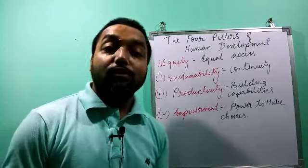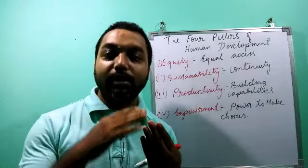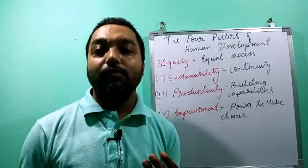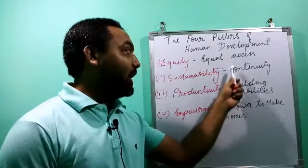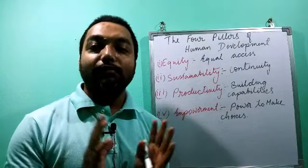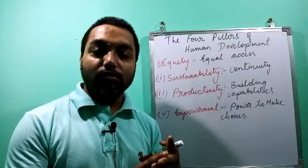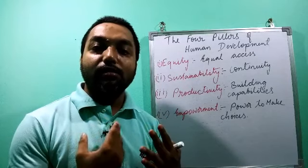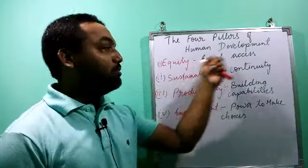Now let us move to the next topic — the four pillars of human development. Human development is relied upon these four pillars; without them, human development cannot survive. The first pillar is equity. Equity means giving equal access to opportunities — any opportunity available in the country should be equally available to everyone, irrespective of gender, religion, social discrimination, or in the Indian case, caste discrimination.